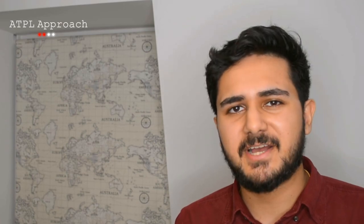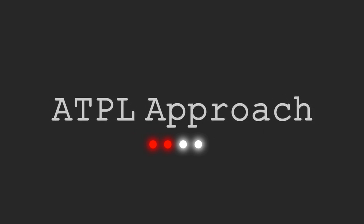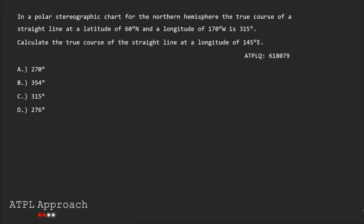So enough with the chat, let's get into it. In a polar stereographic chart for the northern hemisphere, the true course of a straight line at a latitude of 60 degrees north and a longitude of 170 degrees west is 315 degrees. We need to calculate the true course of the straight line at a longitude of 145 degrees east.